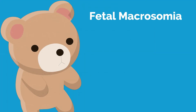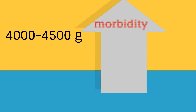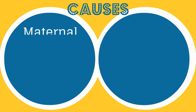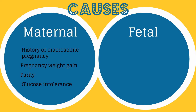Let's start with the pregnancy that was big. We will discuss the definition, significance, and management issues with fetal macrosomia. Fetal macrosomia is defined as a very large fetus, typically between 4,000 to 4,500 grams, and morbidity sharply increases when the fetus is greater than 4,500 grams. Maternal factors include a history of a macrosomic pregnancy, pregnancy weight gain, parity, and glucose intolerance during pregnancy.